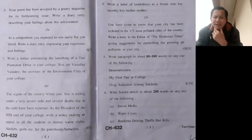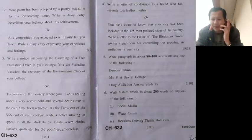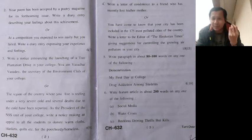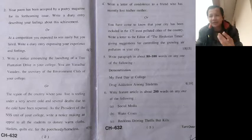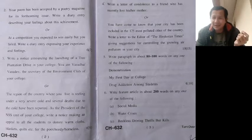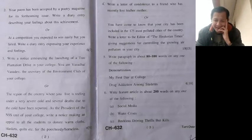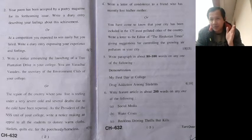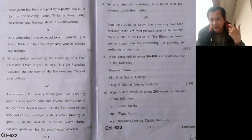Moving on to diary entry, which is pretty simple. For instance, your poem has been accepted by a poetry magazine for its forthcoming issue — write a diary entry. You'll just write about your feelings, how great you feel. It's a great magazine. Use your imagination. Maybe add a couple of lines or a short poem of your own. Just remember that a diary entry is for you — it is not meant to be shown to others. You write it for yourself.